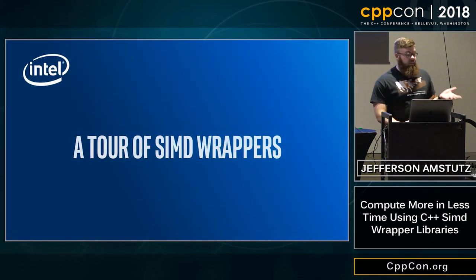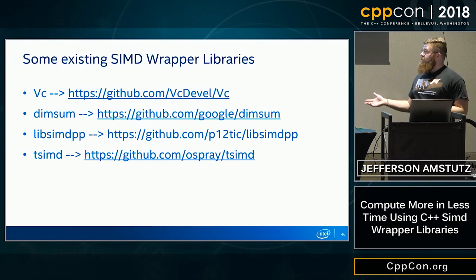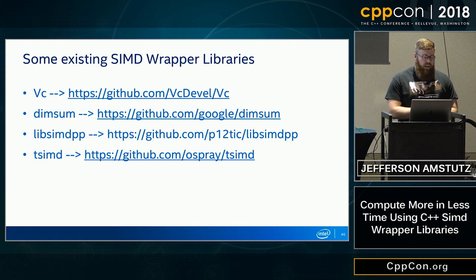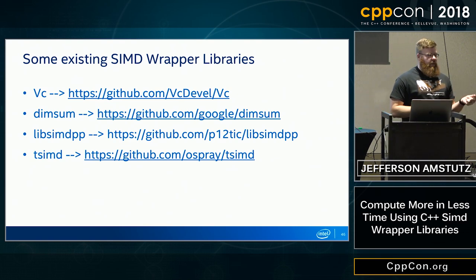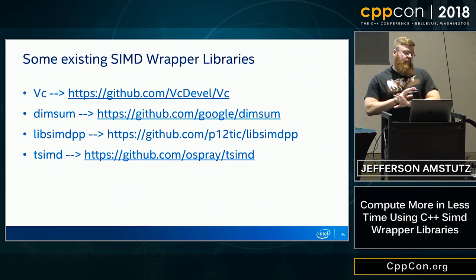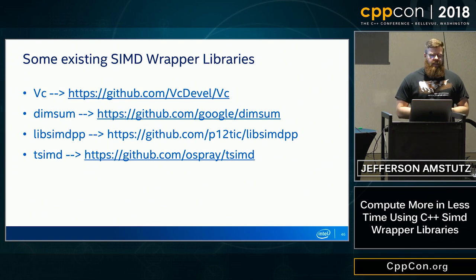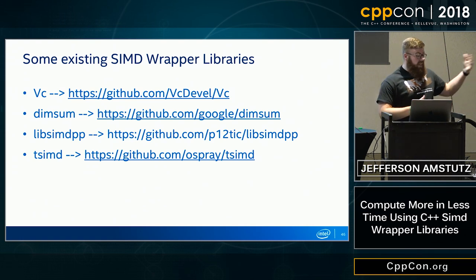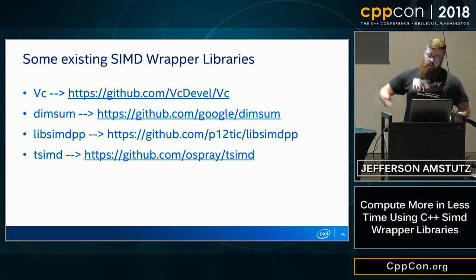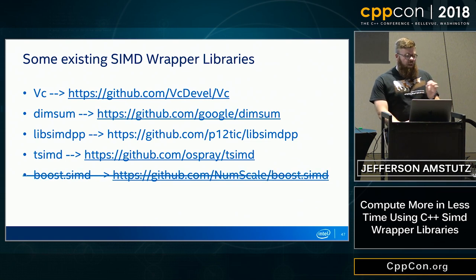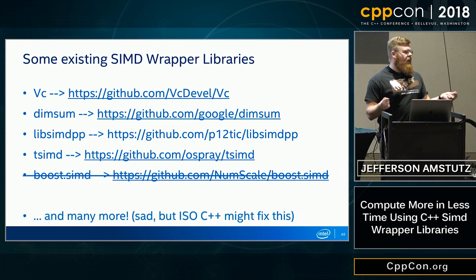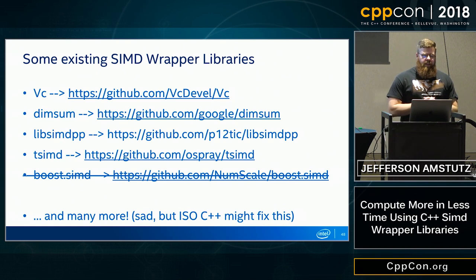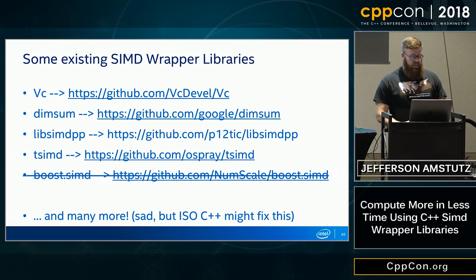There are a number of SIMD wrapper libraries out in the wild. VC is the library being used to prove out the proposal to get these into the C++ standard library — if you haven't used any, go look at VC first, as it's most likely to make it into the standard. boost.simd is being rewritten by NumScale. I wrote tSIMD, and there are many others usually embedded in projects using them — standardizing in C++ would be a great way to fix that fragmentation.